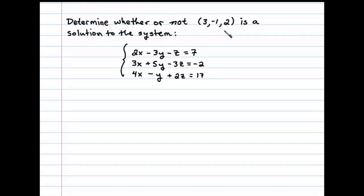Determine whether or not (3, -1, 2) is a solution to the system. To answer this question, we need to find out if this ordered triple satisfies all three equations. To do that, we'll substitute. Let's begin with the first equation.